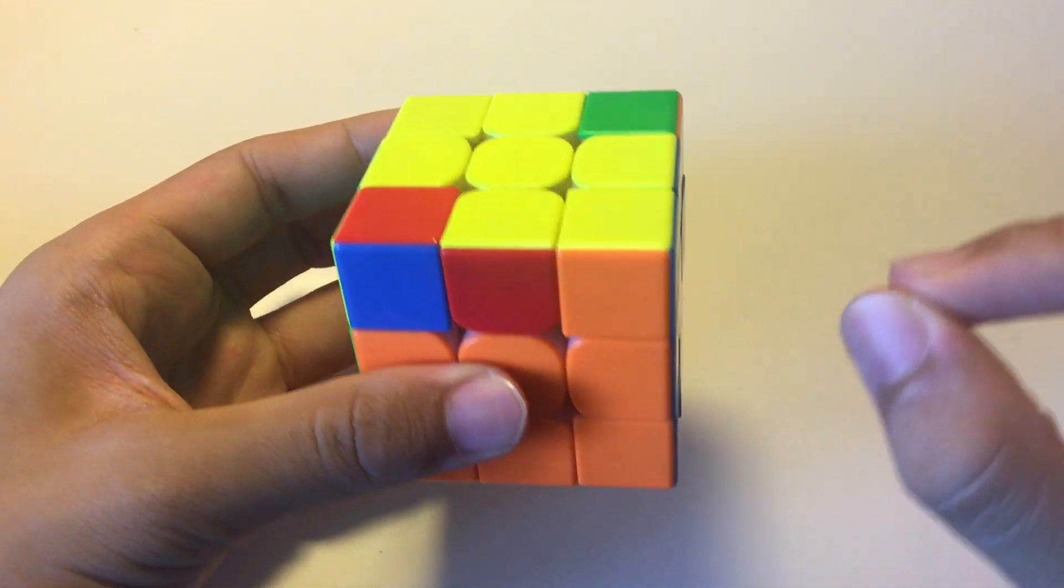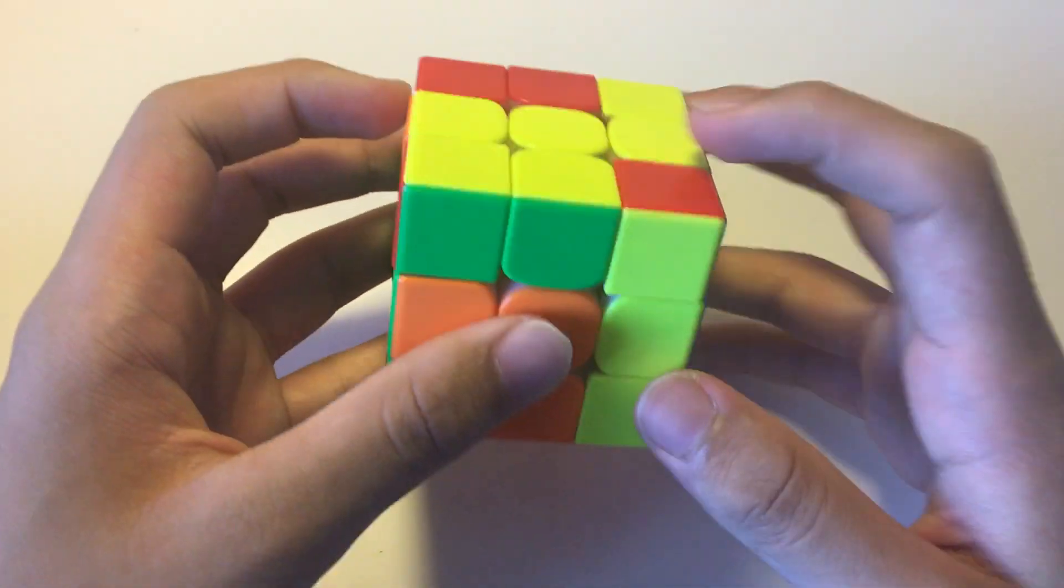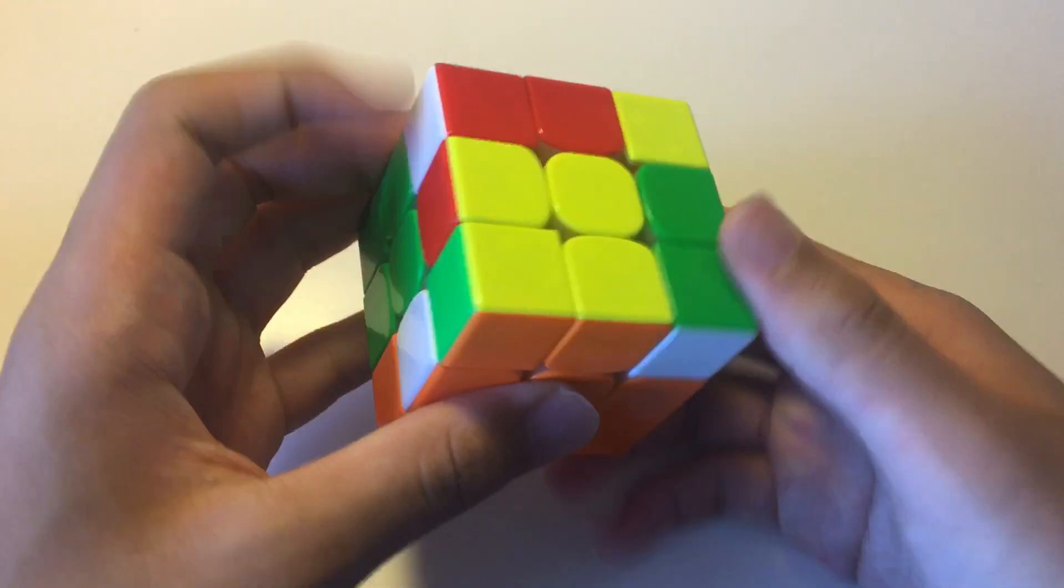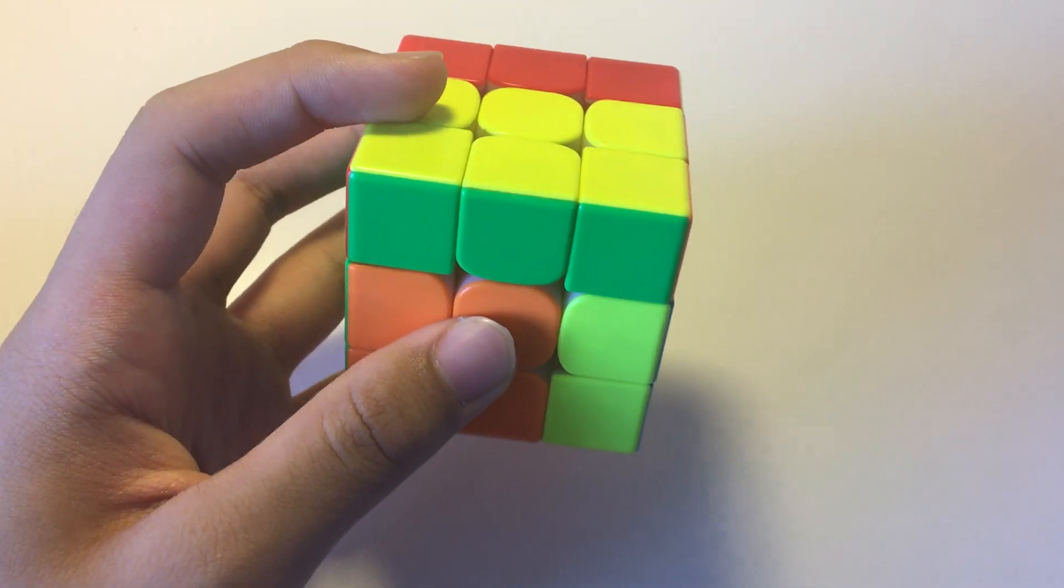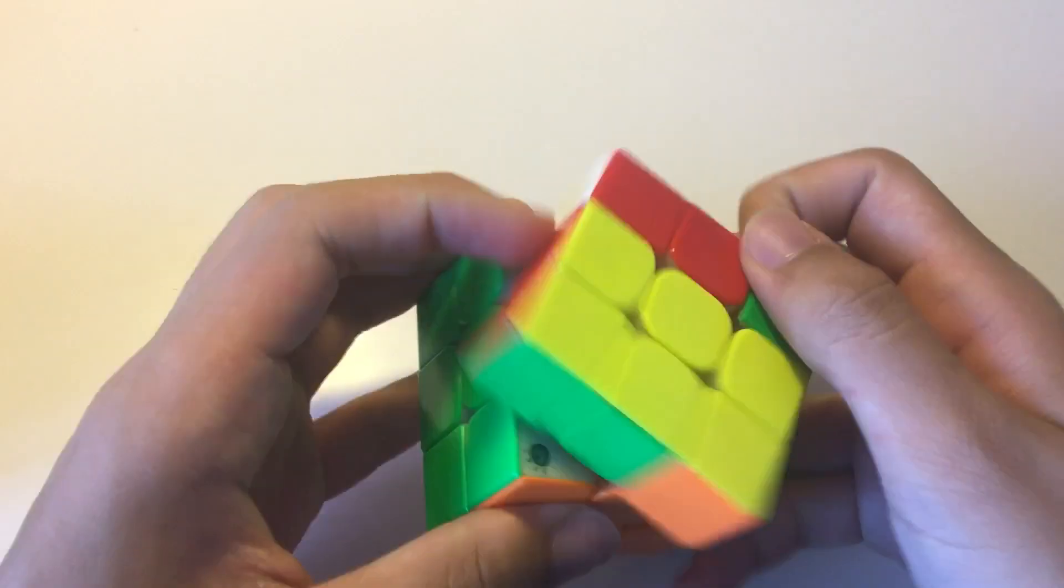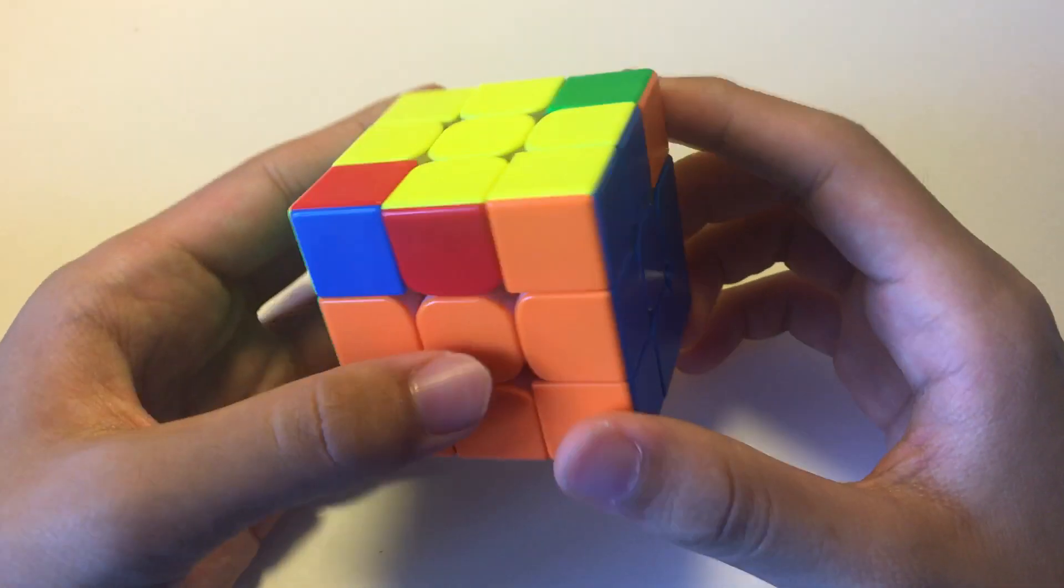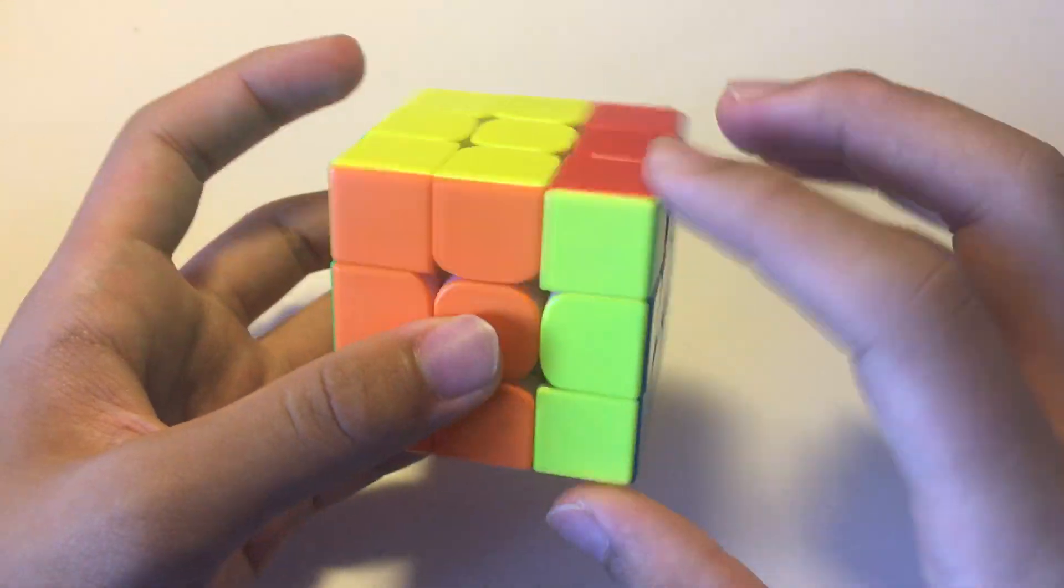Here, you do a slightly longer setup move. You do R prime, U prime, and then you do the T perm. And then to undo R prime U prime, you'll do U first and then R. So U, R, and that completes the algorithm. So R prime, U prime, and then T perm, and then undo. So those are the four cases.